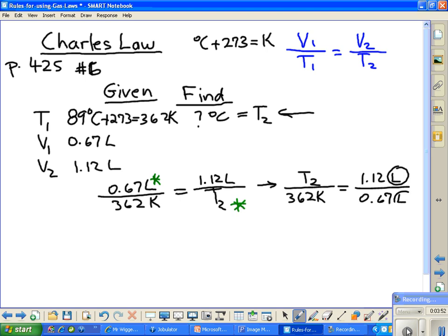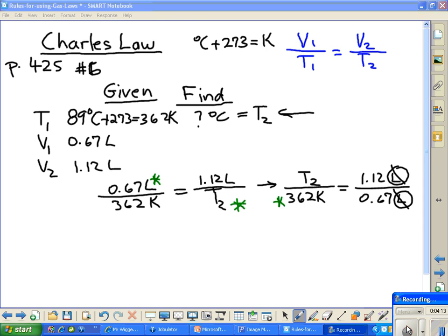We've got T2 over 362 Kelvin is equal to 1.12 liters over 0.67 liters. And now you see we can circle those guys and get rid of them and just divide out the right side. It's very easy to solve.